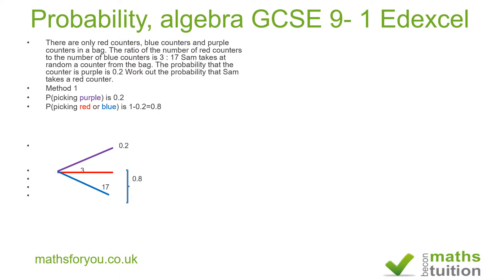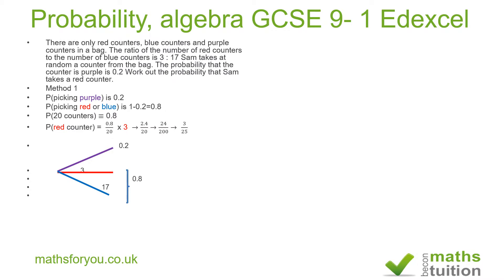So now it becomes a question of proportionality. Picking one from 20 red and blue counters gives a probability of 0.8. The probability of picking a red counter then becomes 0.8 divided by 20, because there are 20 red and blue counters together. So the probability of picking a red counter is 0.8 over 20 times 3.